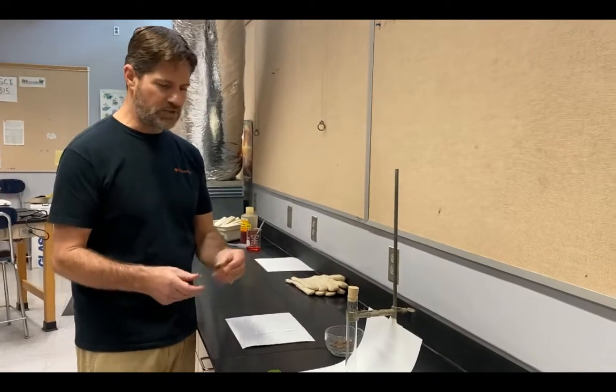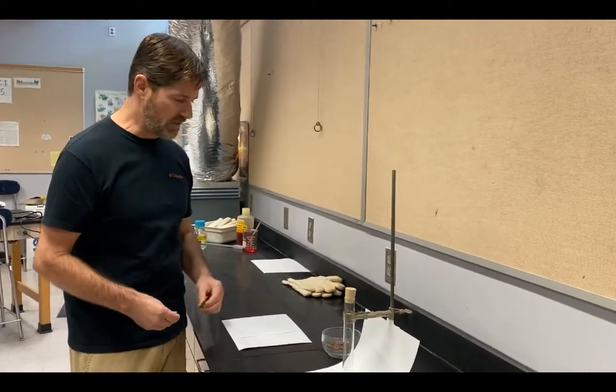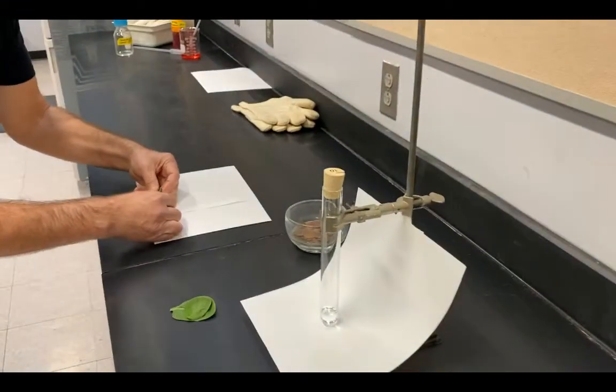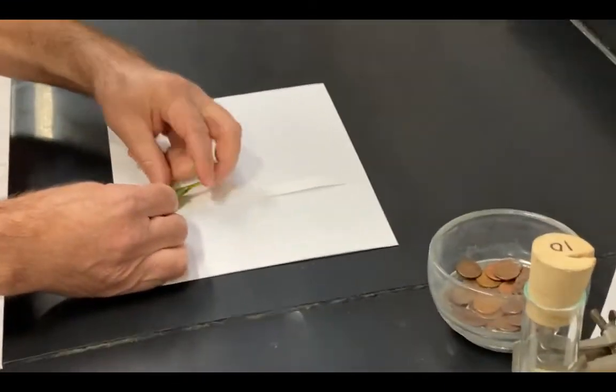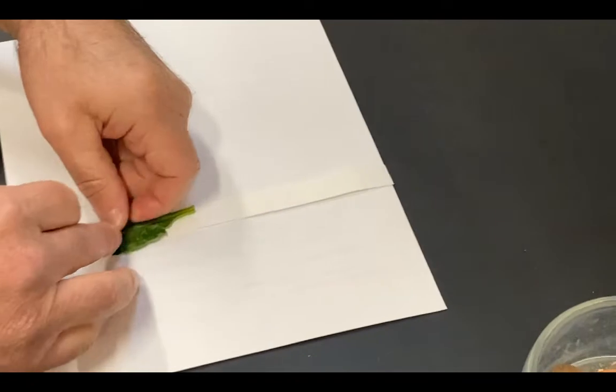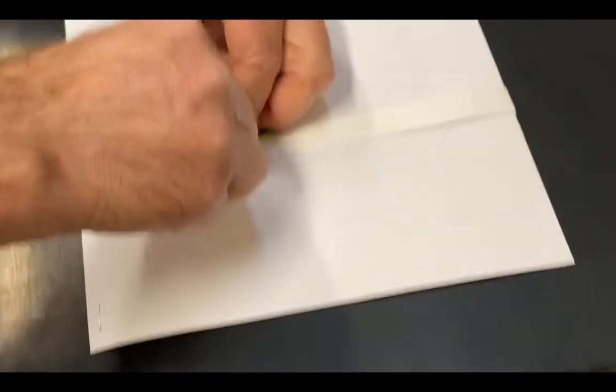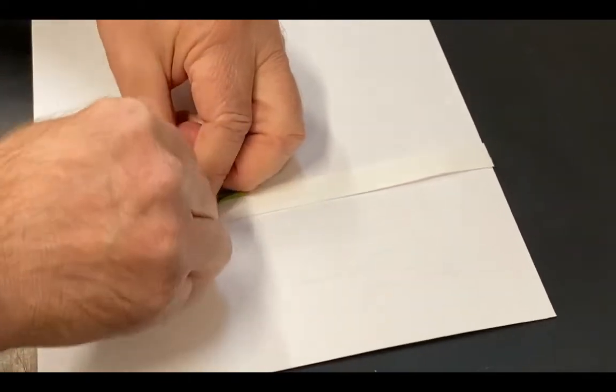So the first thing I have to do is I actually need to get some pigment on that paper. So to do that, I'm going to leave a gap down at the bottom of my paper and I'm going to place a leaf across this and I'm going to start rolling this penny to basically squish some of that pigment into there.